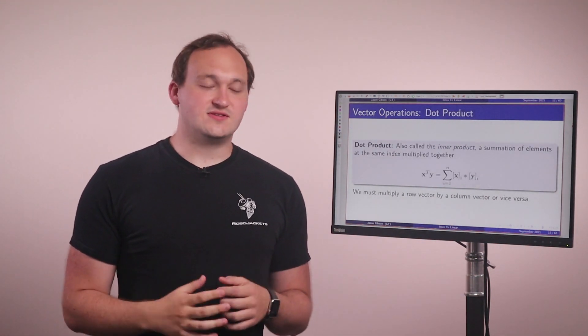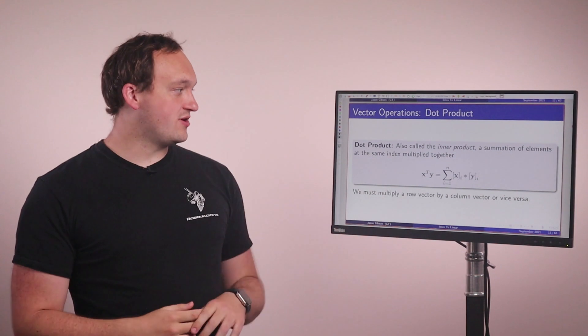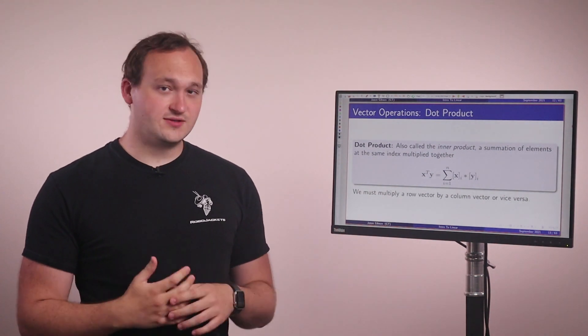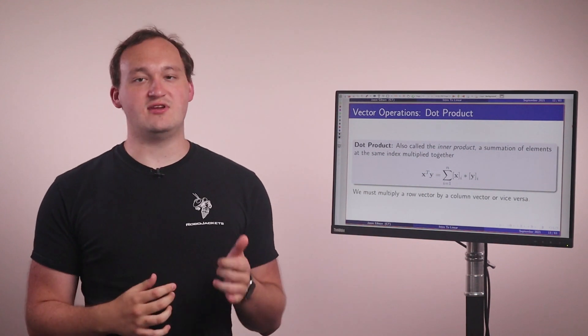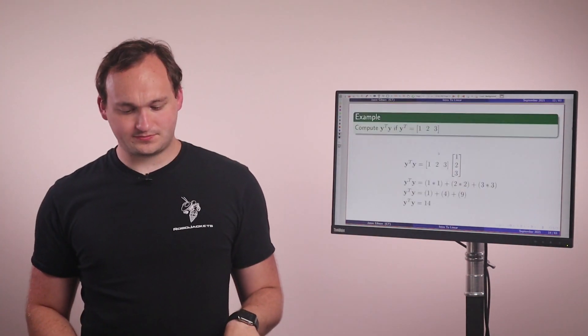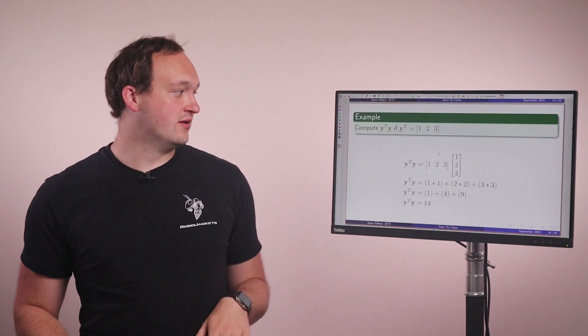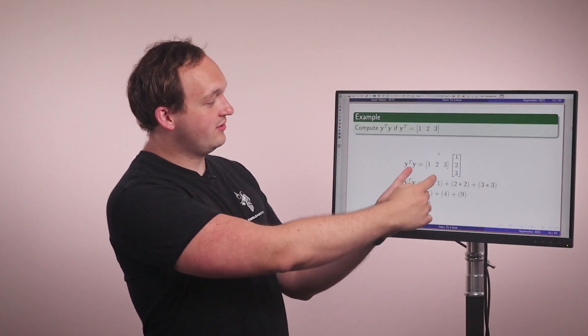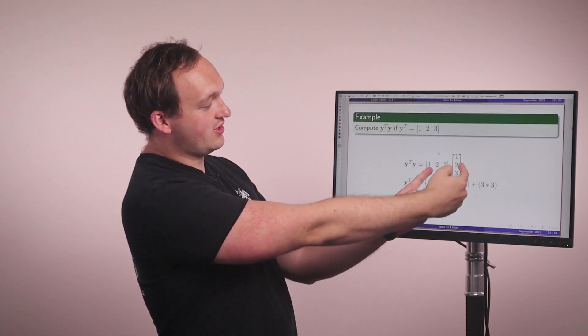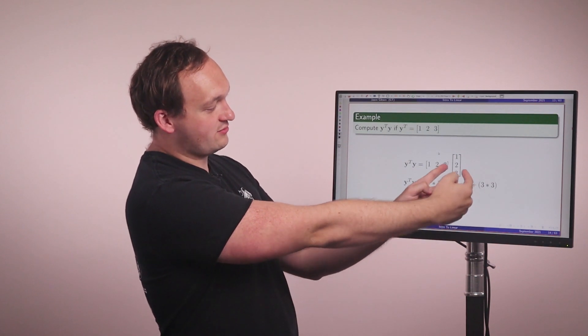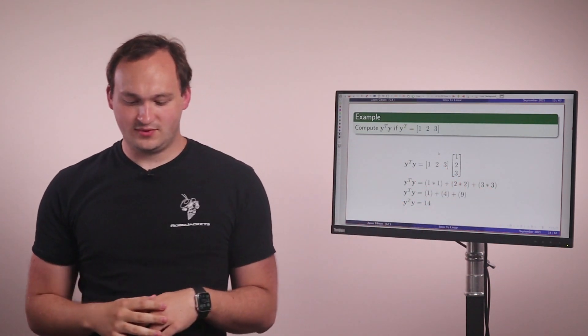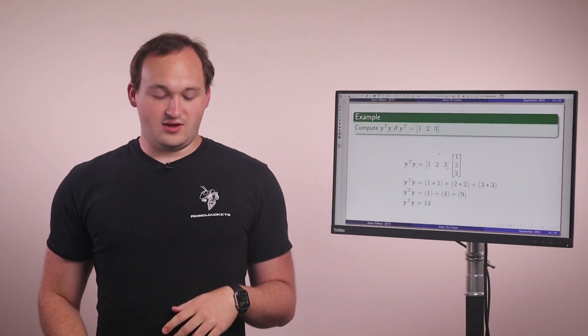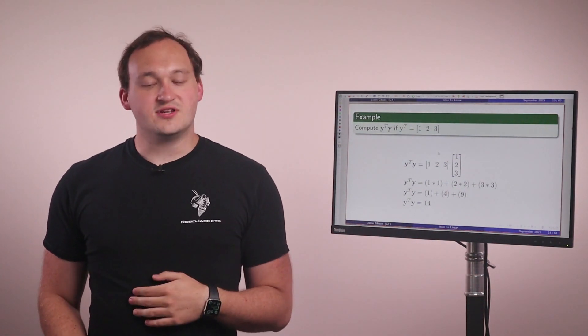The next thing we have is a dot product. So this is kind of like multiplication in the vector case. It's also called an inner product. So what we're going to be doing is summing each element at the same index multiplied together. This is an example of what that looks like. So we're taking one and one and multiplying them together, two and two and multiplying them together, three and three, multiplying them together, and you're summing across all values. Doing this together, we get 14 for Y transpose Y.